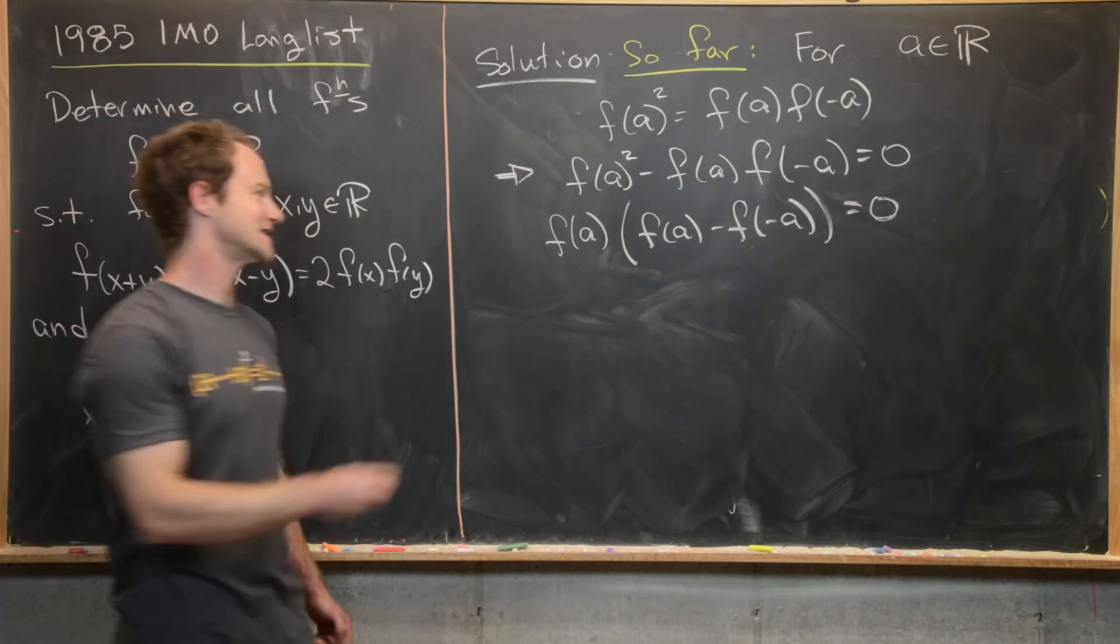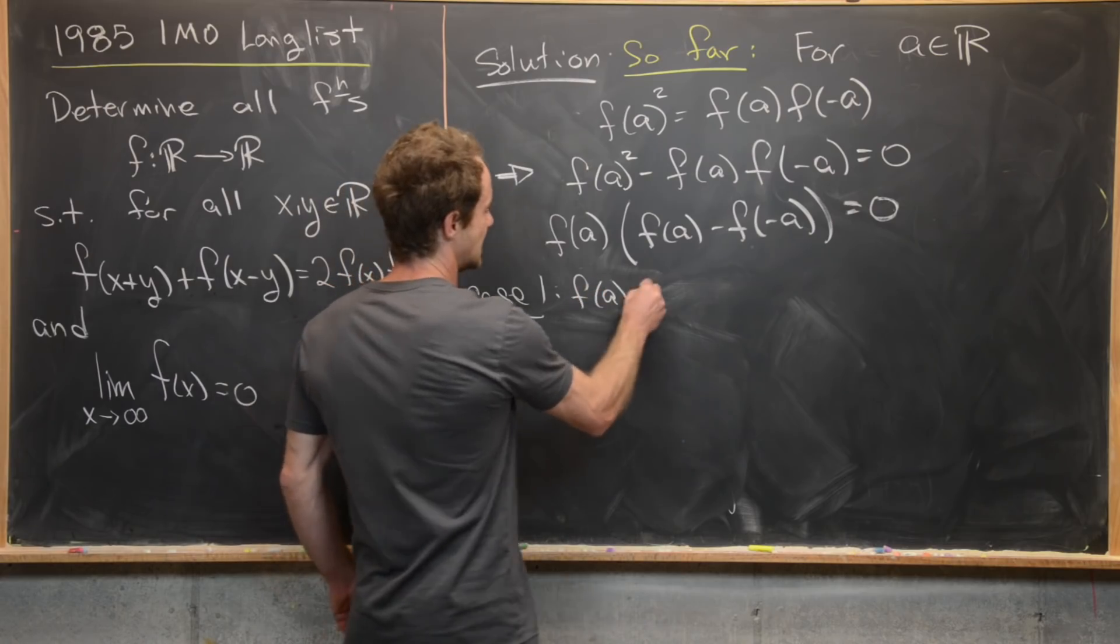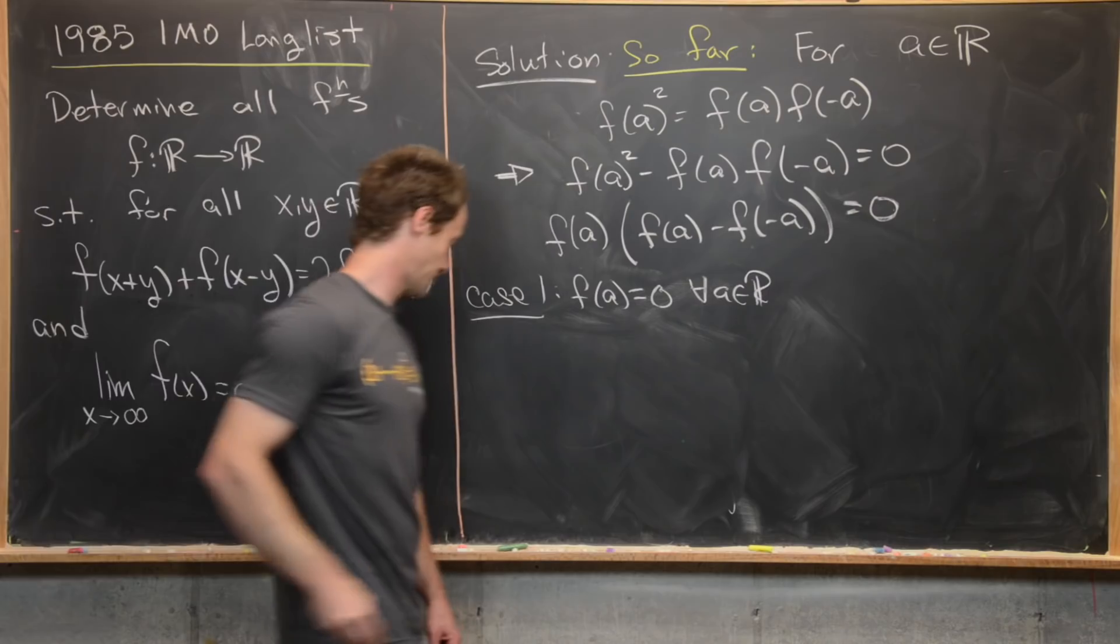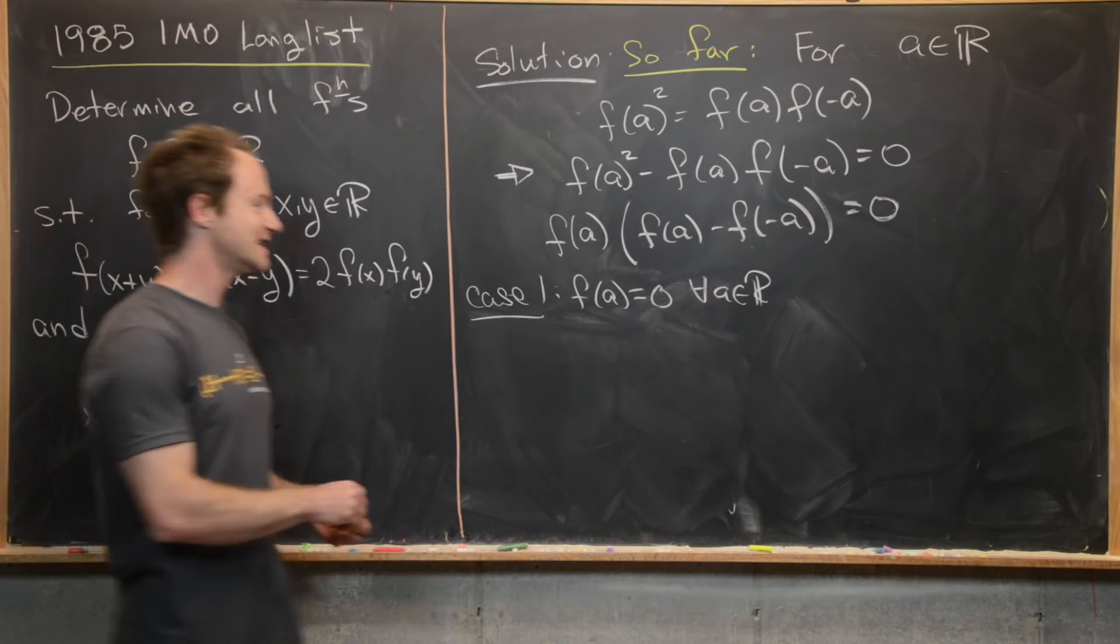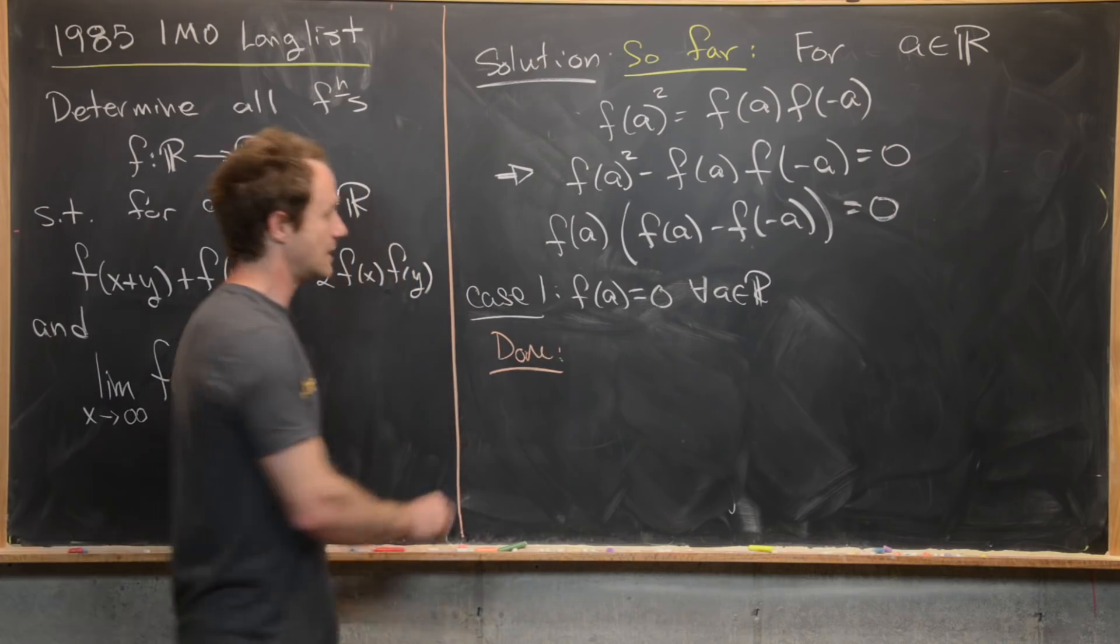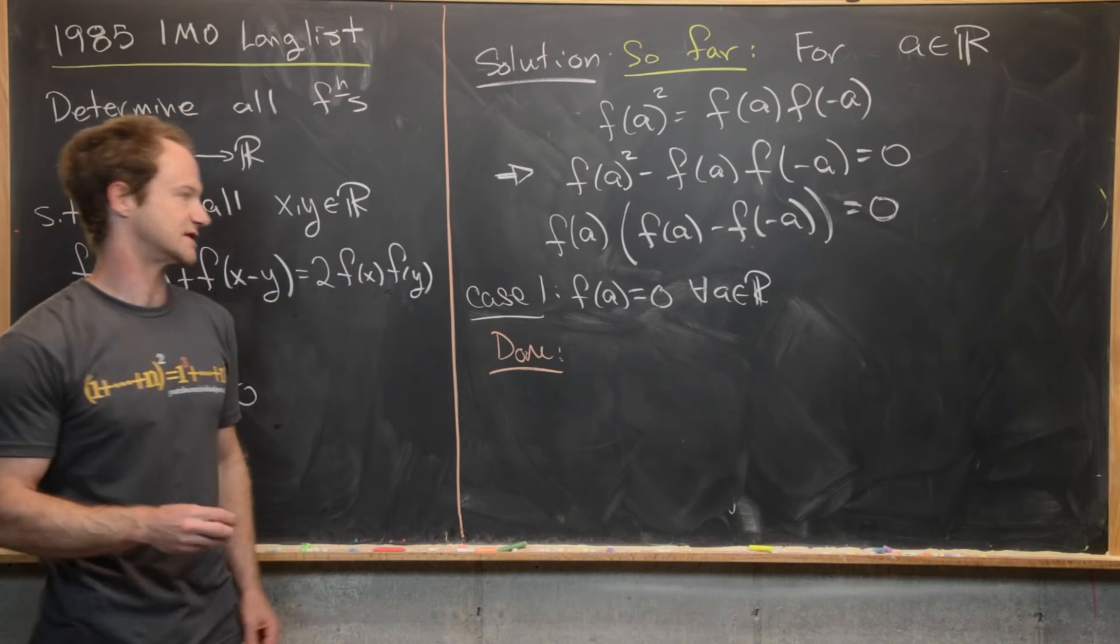Case number one is f(a) equals zero for all real numbers a. I should point out that if this case is true, then we are in fact done because we know exactly what the function is. The function is just f(x) = 0.